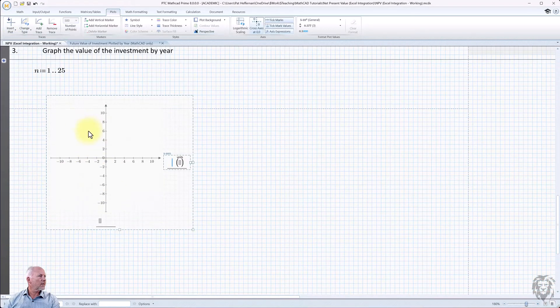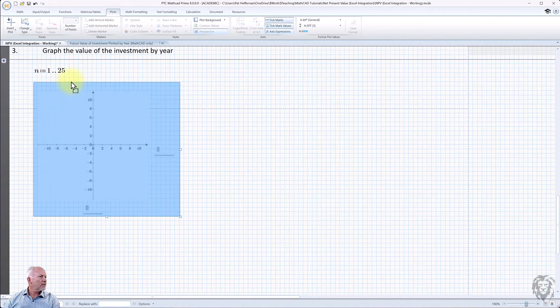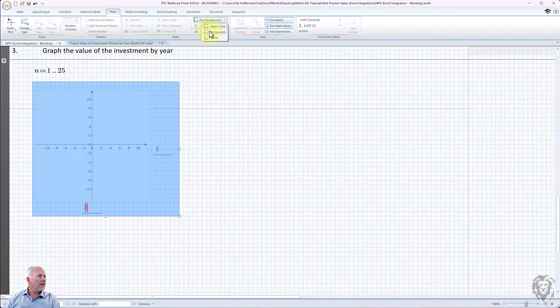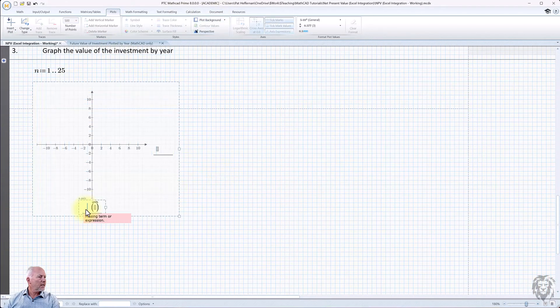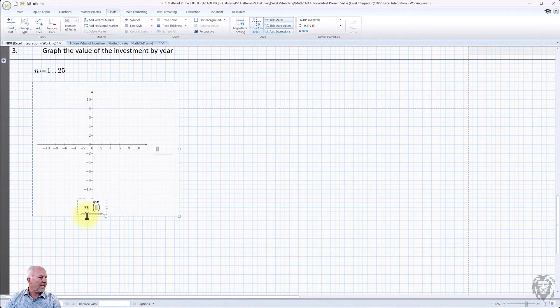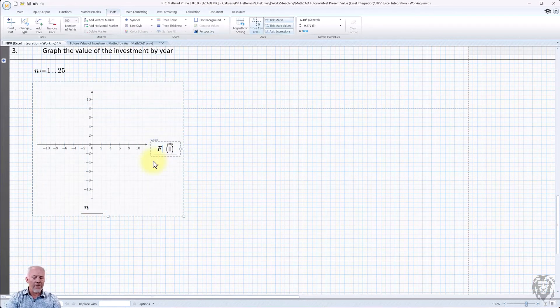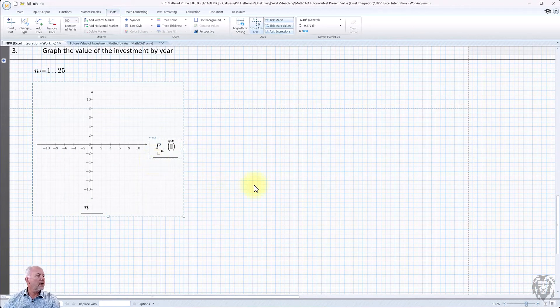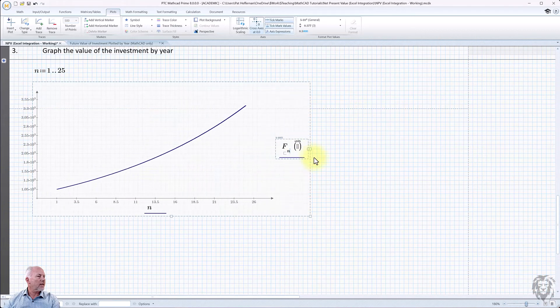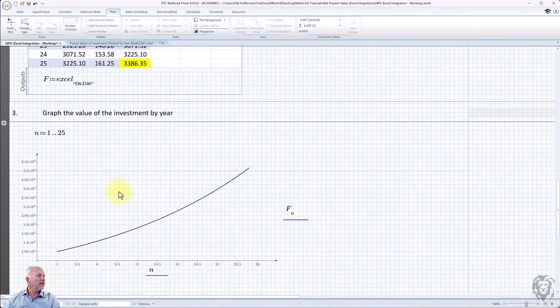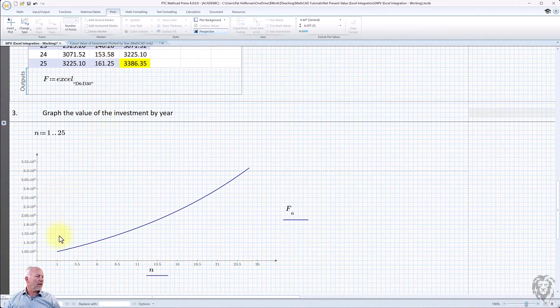XY plot. There we go. So we'll just set that there and plot the background to transparent. And of course, what we want is N along the bottom and F at N along the right. And let's strip that out. And so we can see that we're able to use the data that we generated in Excel back in our MathCAD sheet, which is really the purpose of that.